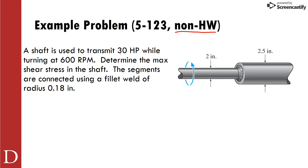We're given information that we have a power transmission of 30 horsepower. We're given also a speed at 600 RPM. So this shaft is rotating at 600 RPM and transmitting 30 horsepower, and we need to find the max shear stress in the shaft. We also have a change in cross-sectional area, otherwise we wouldn't be talking about this, and we have the method that's joining these two together is this fillet weld here, and we're given the radius of that fillet weld is 0.18 inches.